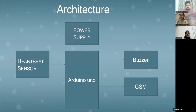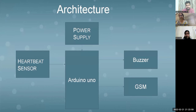Coming to the architecture: we place the pulse oximeter sensor on the patient's finger and supply power to the device. The Arduino then takes the input and generates a buzzer alarm if the heartbeat of the patient is abnormal. If the patient's heartbeat is abnormal, the buzzer is triggered.